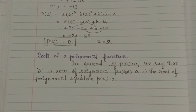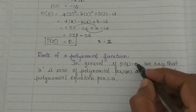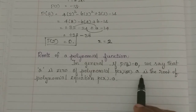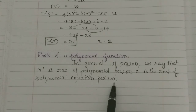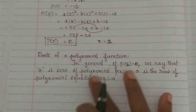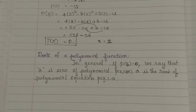Next, we will look at the roots of a polynomial function. In general, if p of a is equal to 0, that means a is called the zero of the polynomial p of x, and a is also called the root of the polynomial equation p of x equal to 0. So the root and zero of the polynomial are the same concept — when p of x equals 0, that value of x is both the zero and the root of the polynomial.